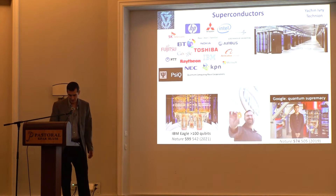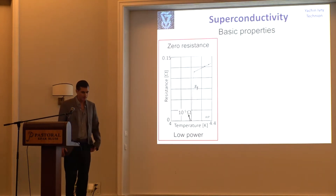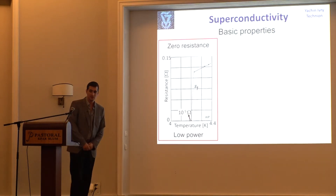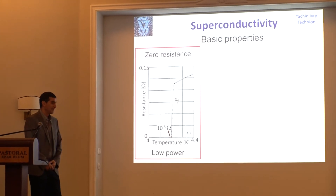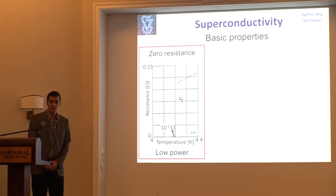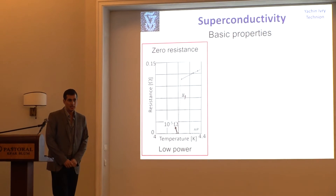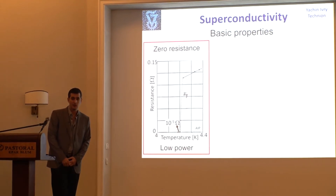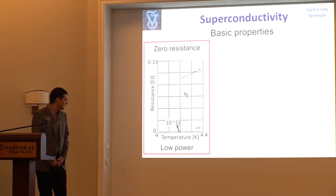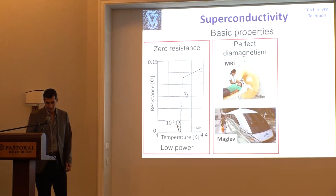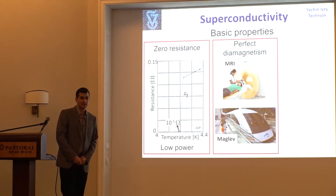Superconductivity is nice and important. It has several properties that make it preferable for quantum technologies or for technologies in general. One thing is that we have an abrupt phase transition — an electric phase transition where we lose the entire resistance, and if we have zero resistance, it means that it can be low power, less dissipative. So this is one advantage.